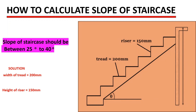Looking at this stair, we have a tread of 200 millimeters — this is our tread here — and then we have a riser of 150 millimeters. Our slope is the angle we have named angle theta. This is our slope, whereby this is the stringer and this is the ground, so the angle that they make here is our slope.